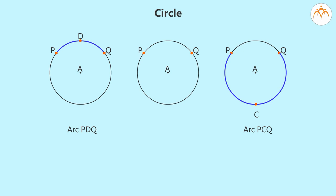Among these two arcs, we call the smaller arc to be minor arc and larger arc to be major arc. That is, in this case, the arc PDQ is minor arc and arc PCQ is major arc.